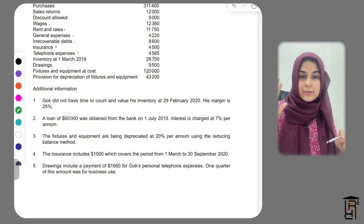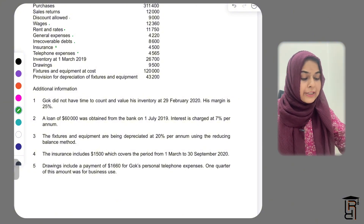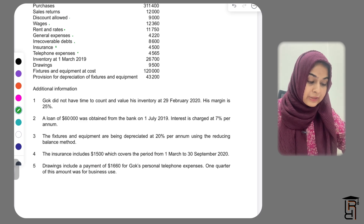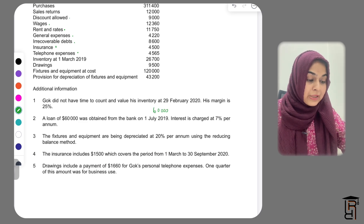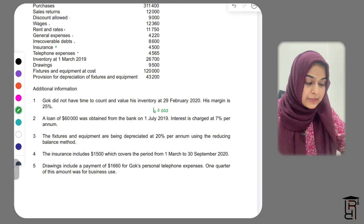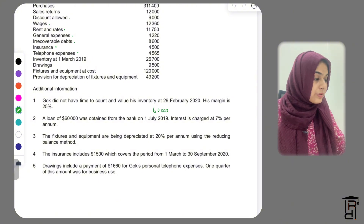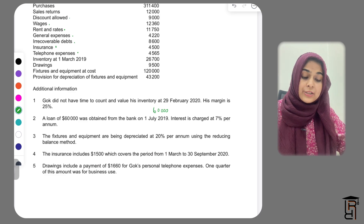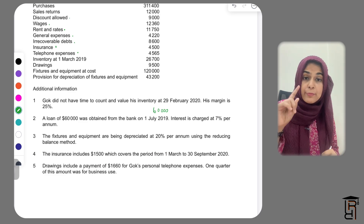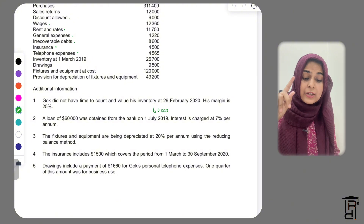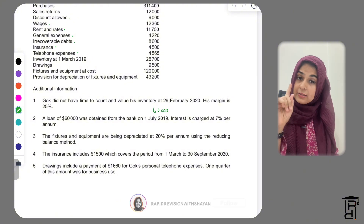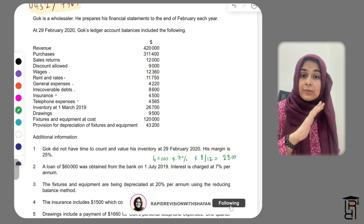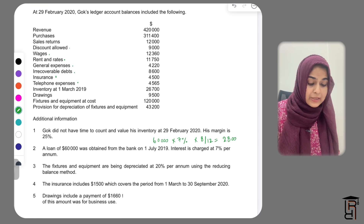The loan started on 1st July 2019, so counting the months — July, August, September, October, November, December, January, February — that is 8 months. So we calculate interest as £60,000 multiplied by 7% multiplied by 8/12, which gives us £2,800. This is our interest expense. Since there is no interest expense in the trial balance, we will accrue the entire £2,800.